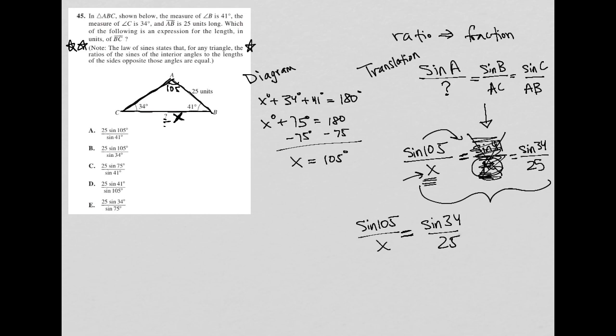So I can just set them equal to each other, and now we can solve for X. So to solve any proportion, which is what this is, one fraction equals another fraction. To solve a proportion, we cross multiply.